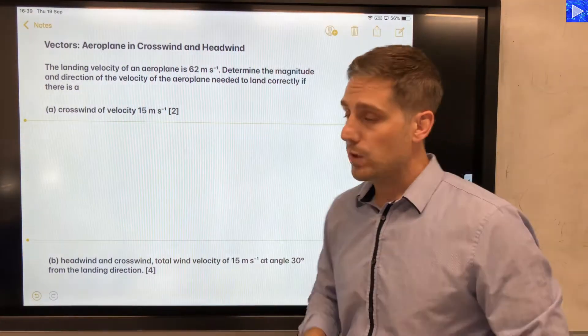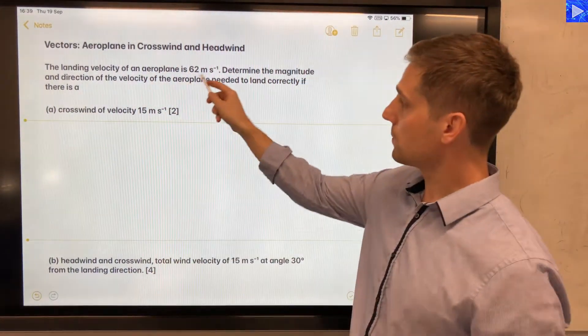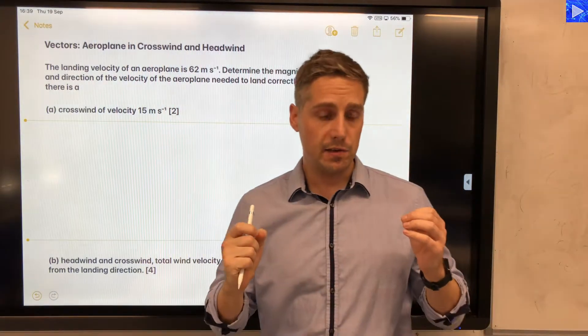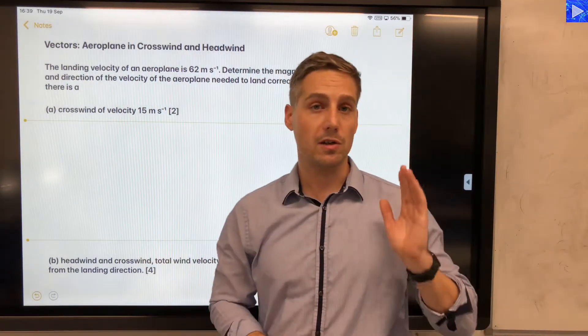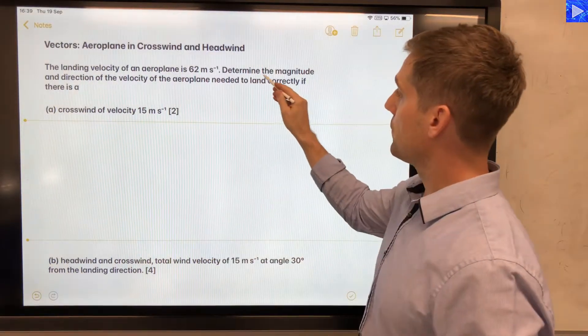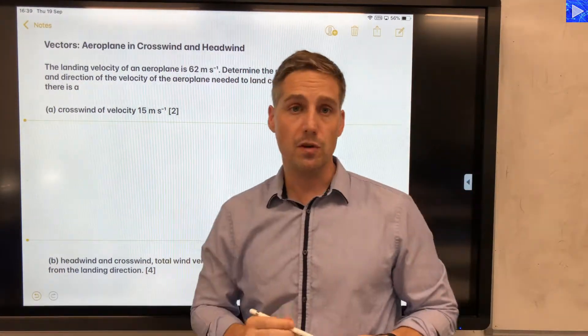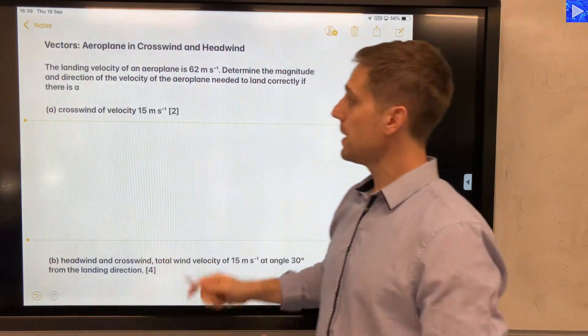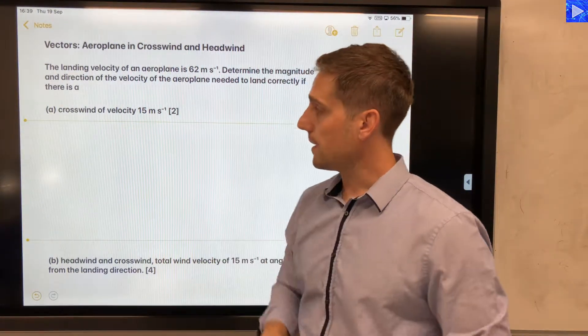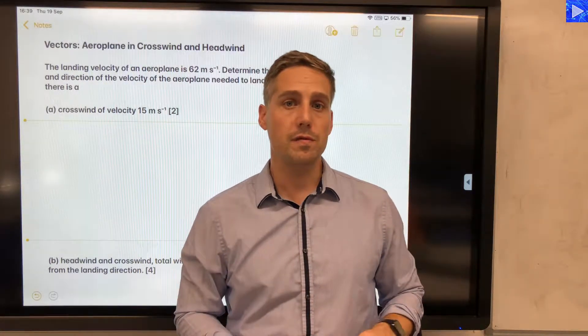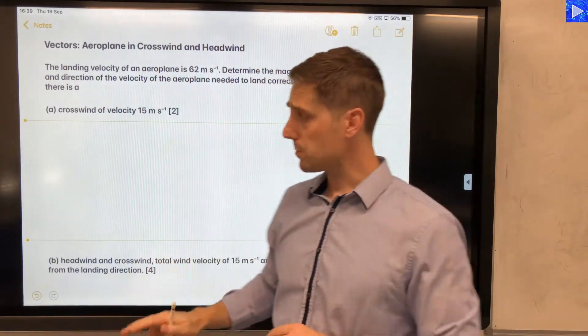In the first part of the problem we have a crosswind. In the context of the problem, we need to achieve a landing velocity of 62 meters per second along the runway. So we've got to determine the magnitude and direction of the velocity that the aircraft is going to need to have in order to give you 62 meters per second when it has a crosswind velocity of 15 meters per second. So that's the first part of the problem.